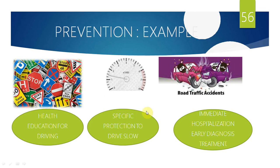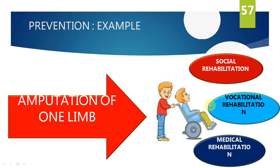Using a road accident example: primary prevention involves sign boards and asking people to wear helmets — educating to prevent accidents. Secondary prevention is when an accident has occurred but we intervene as early as possible to minimize complications. Tertiary prevention is after an accident where amputation of a limb has occurred — we replace it with an artificial leg, provide a wheelchair, and offer social, vocational, and medical rehabilitation.